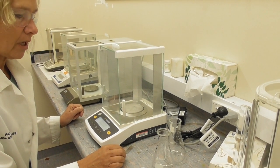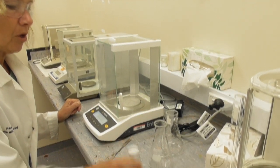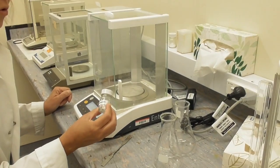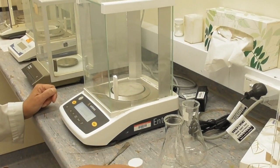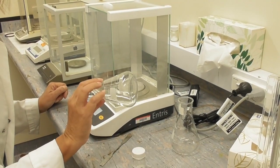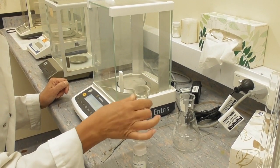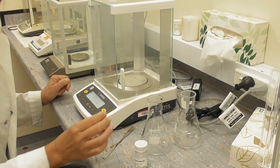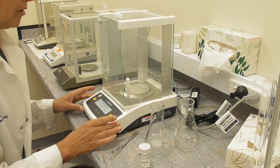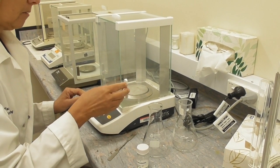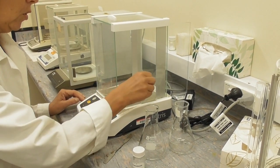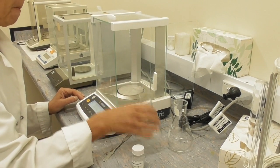To start my titration I have to weigh out about 0.2 grams of sodium peroxyborate into a dry conical flask. The weight needs to be determined on an analytical balance which shows weight into milligram range.